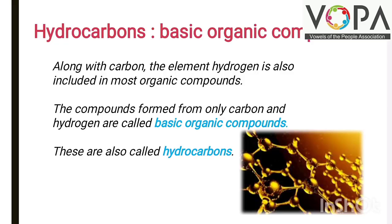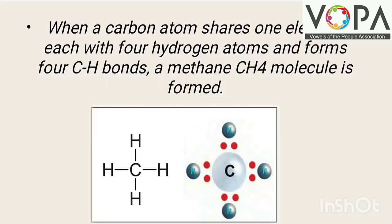Hello students, today we are going to start part number two: carbon and important element, chapter number 13, hydrocarbons. The first topic is the hydrocarbon as a basic organic compound. Along with carbon, the element hydrogen is also included in most organic compounds, and therefore they are called basic organic compounds. When carbon atoms share one electron each with four hydrogen atoms, they form C-H single bonds, forming a methane molecule. You can see the structure of the single bonded and also the dot structure of methane.